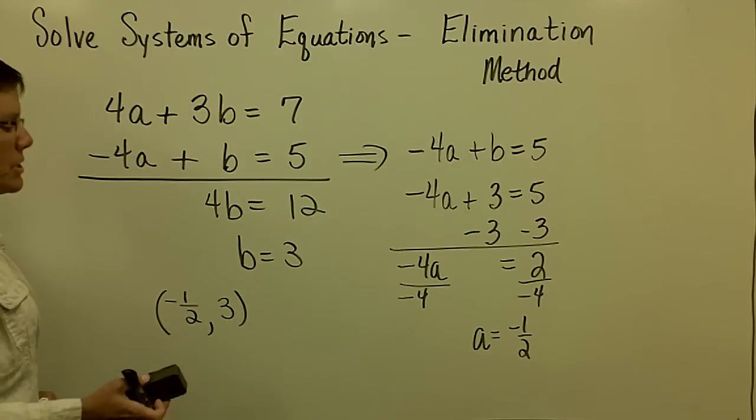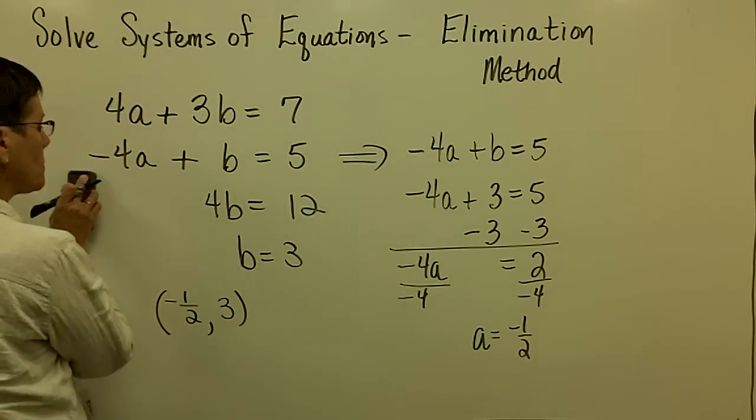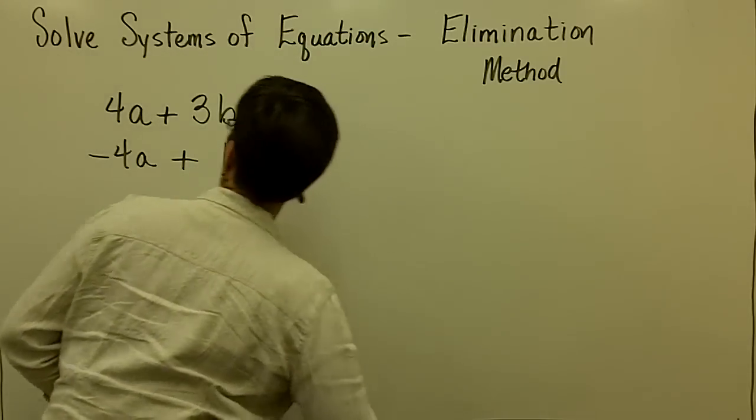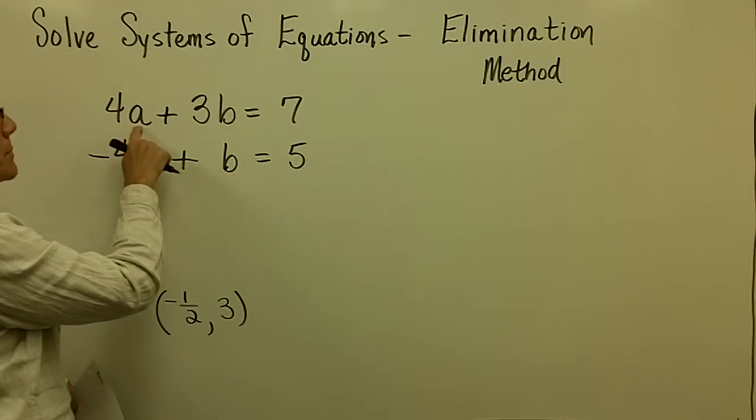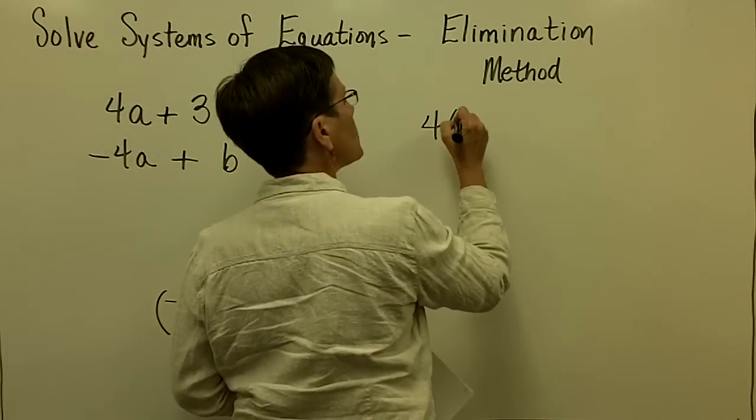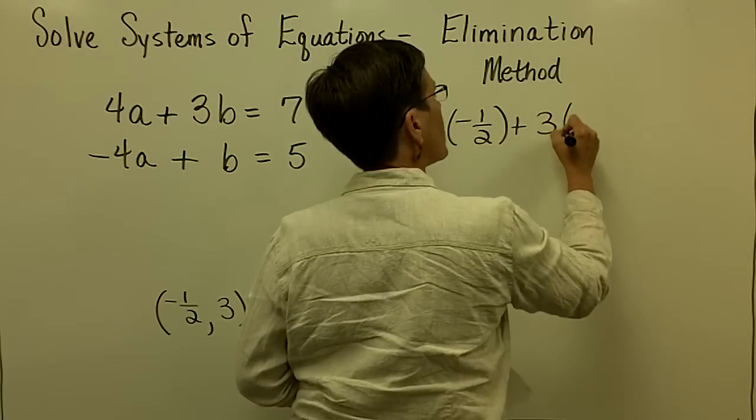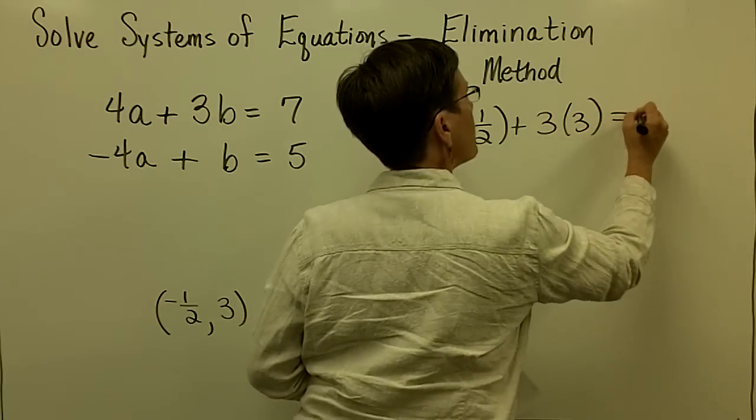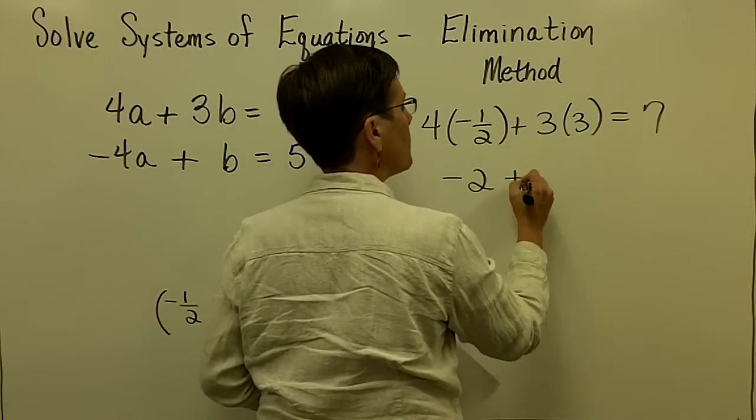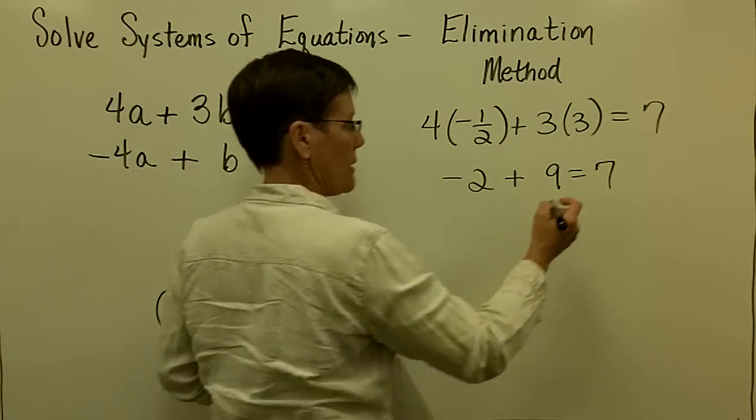And then finally, let's go ahead and check this one because it's got a fraction. So I'm going to take away all my work. And I'll start with the first equation. So 4 times a plus 3 times b equals 7. With a being equal to negative 1 half and b being equal to 3. So 4 times negative 1 half is negative 2 plus 9. And I want to know if that's equal to 7. And it is. It is equal to a positive 7.